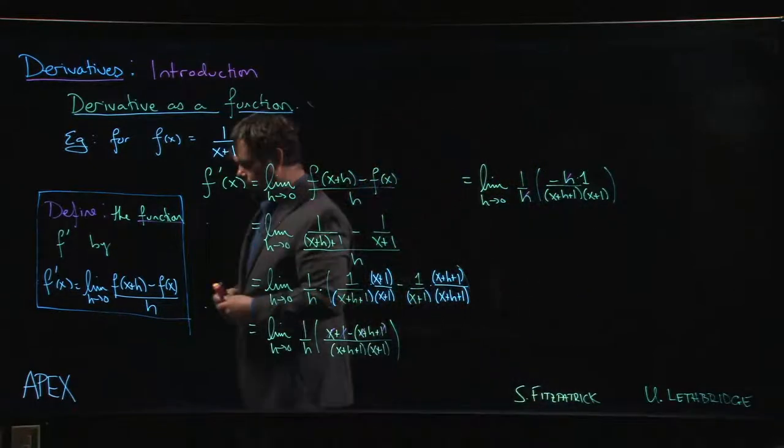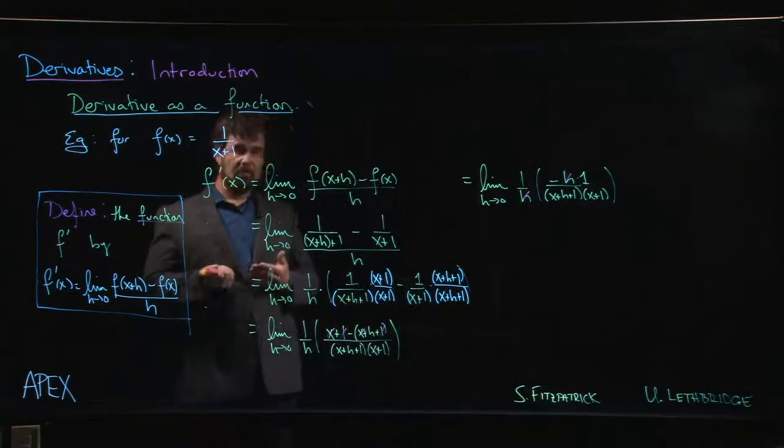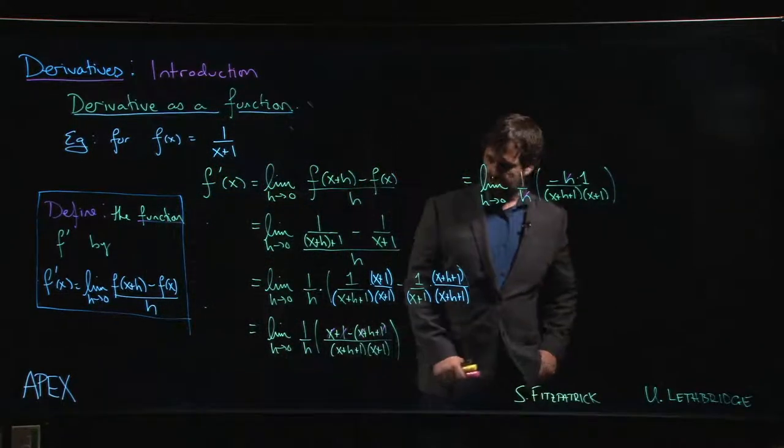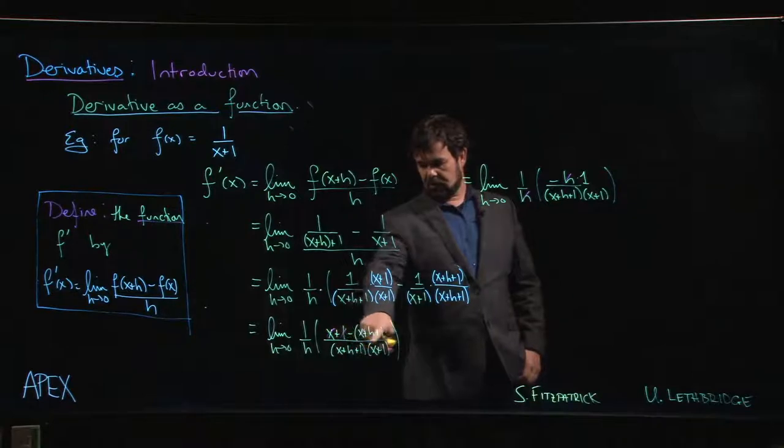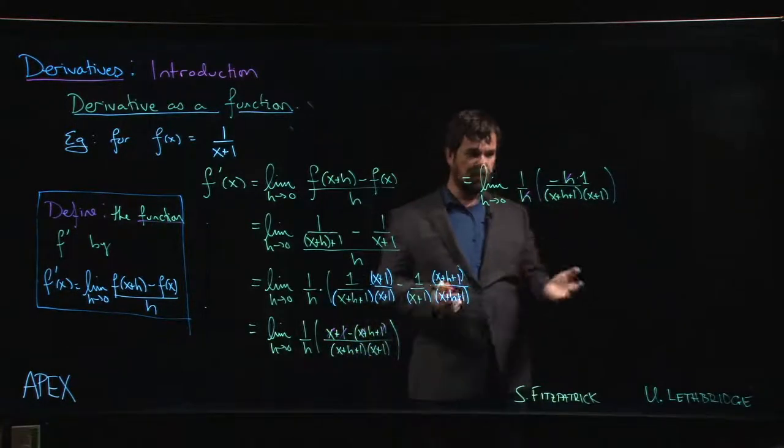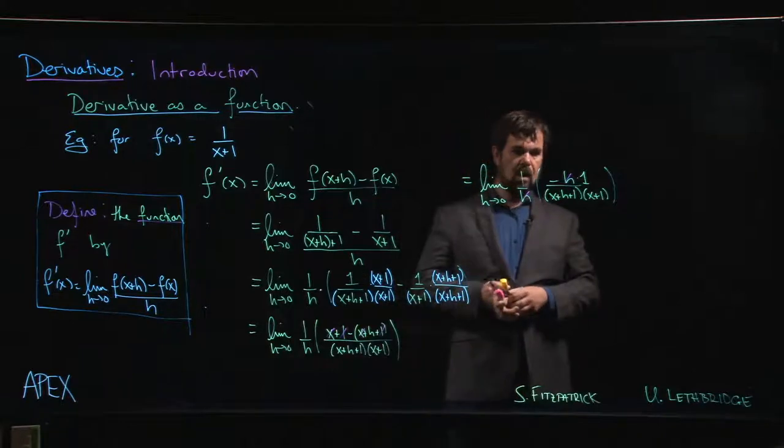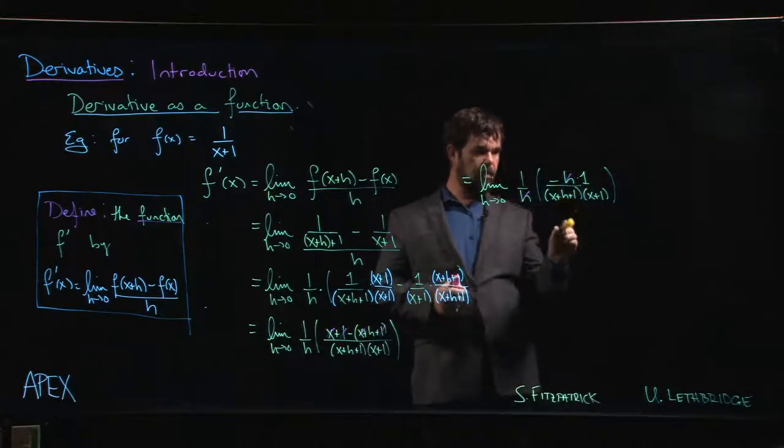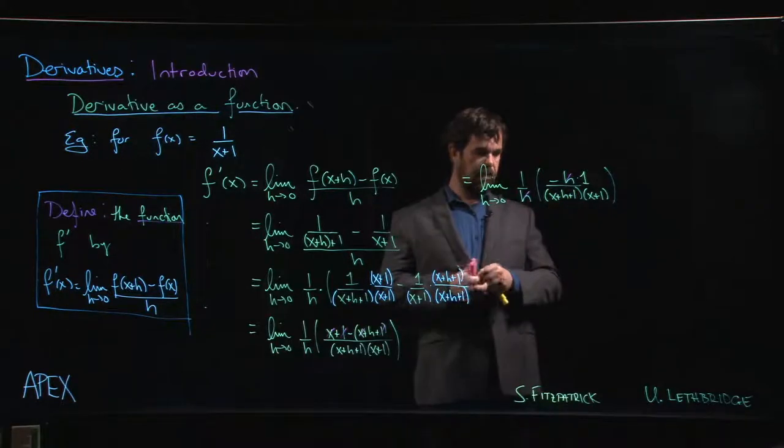If you weren't careful with that 1 over h, you might have that h in the numerator and then you might be confused that nothing seems to be canceling. You're just getting zero for your answer because you have h in the wrong place. If you're not careful about the parentheses, you might be missing that minus sign. There are a few pitfalls, a few places where you can go wrong.